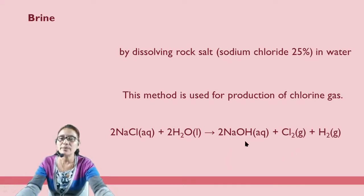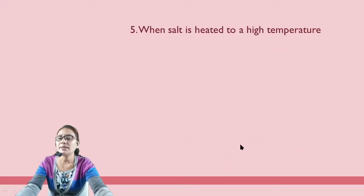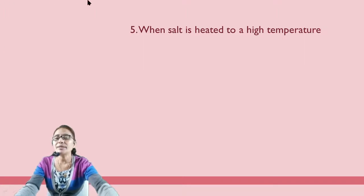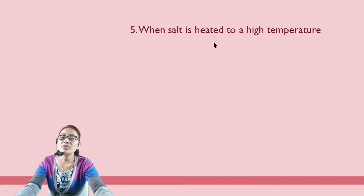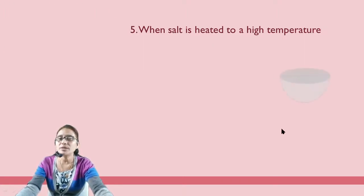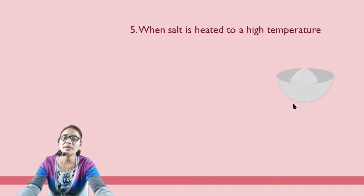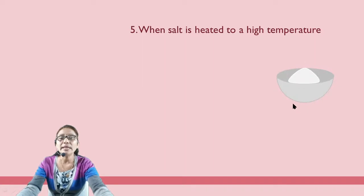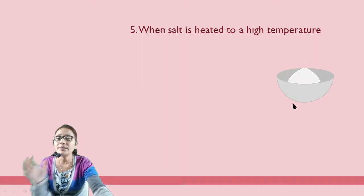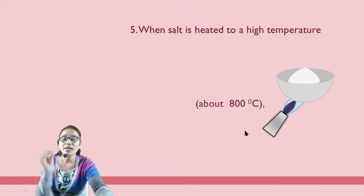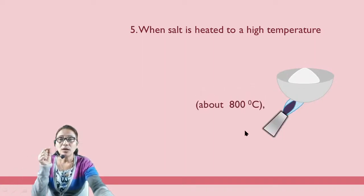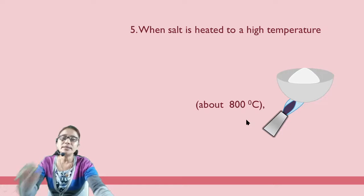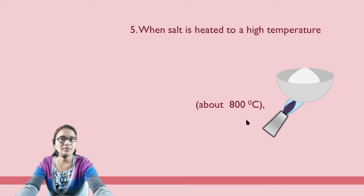When salt is heated to a high temperature — up to 800 degrees Celsius — it melts and becomes a molten state, also called fused salt.